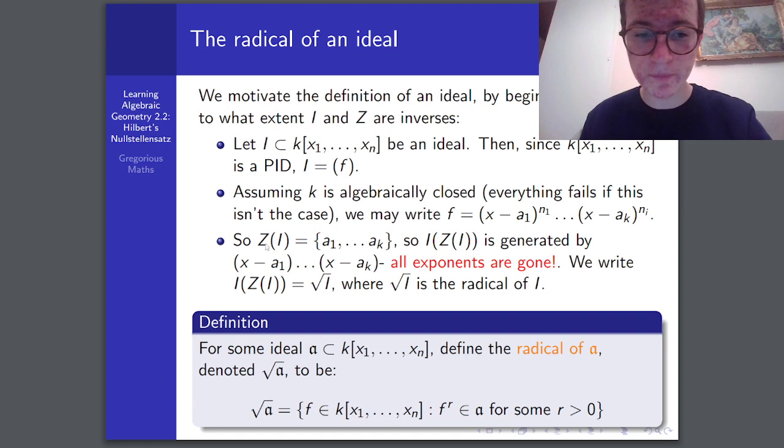then we can write f in the following form. And so, when we apply z to this i, we get a1 up until ak. And so, when we do i of this set now, this is now no longer generated by f, but it's generated by x minus a1 up until x minus ak. That is, it's the same thing as this, but all of the exponents are gone.